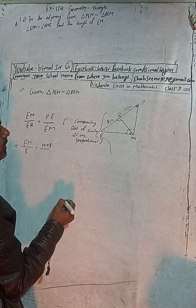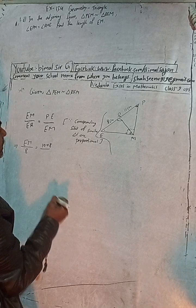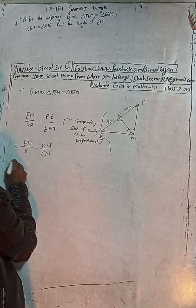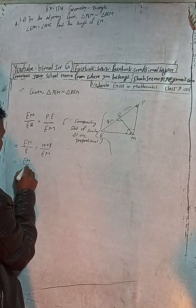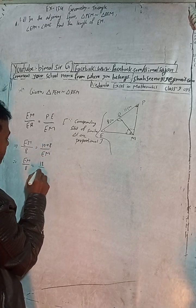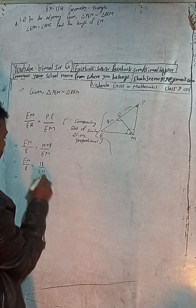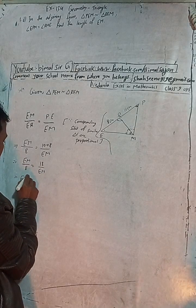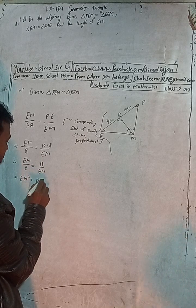Now, what is EM? We see: EM divided by 8 is equal to 18 divided by EM. Cross-multiplying gives EM squared equals 8 times 18, which equals 144.